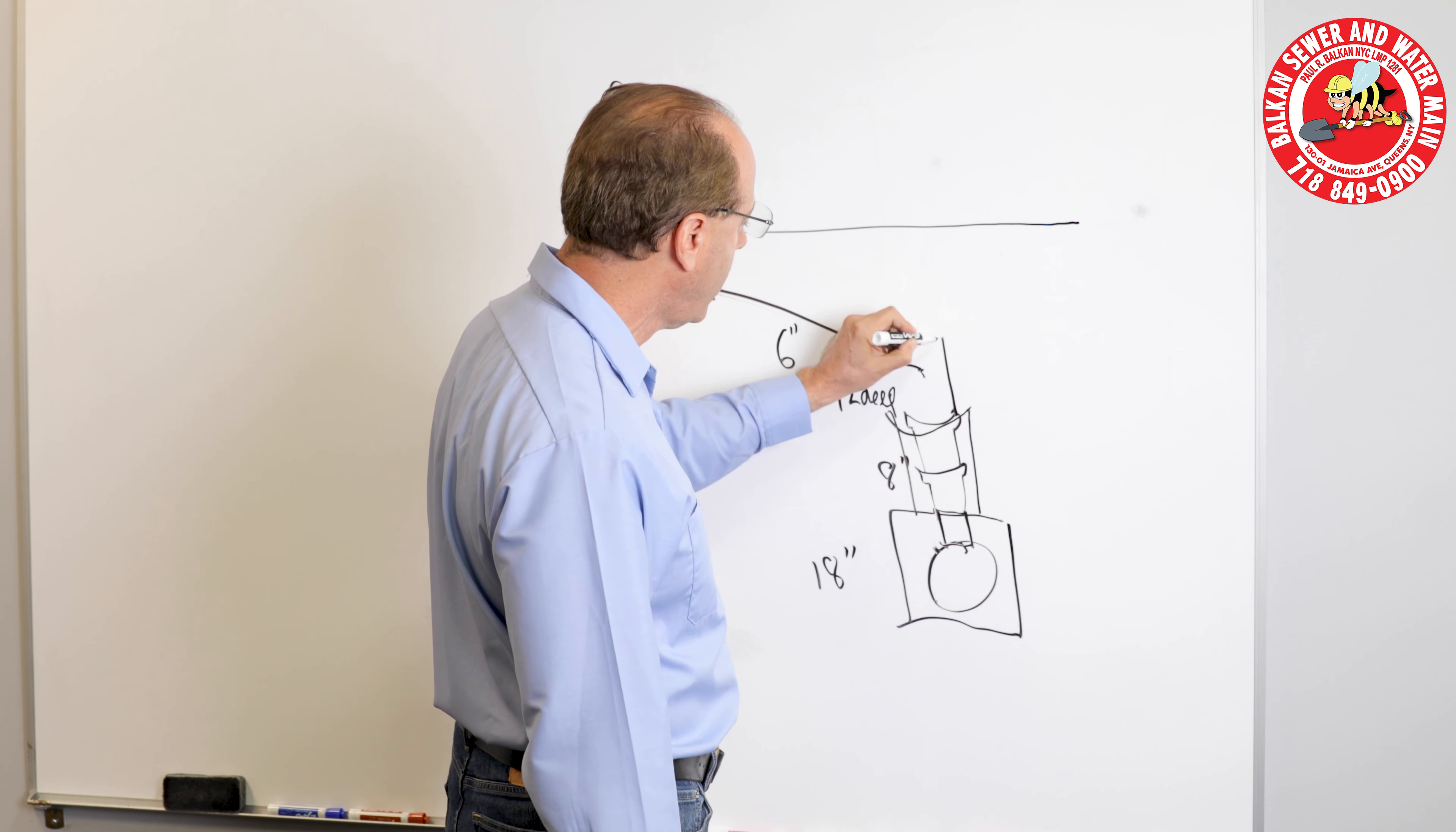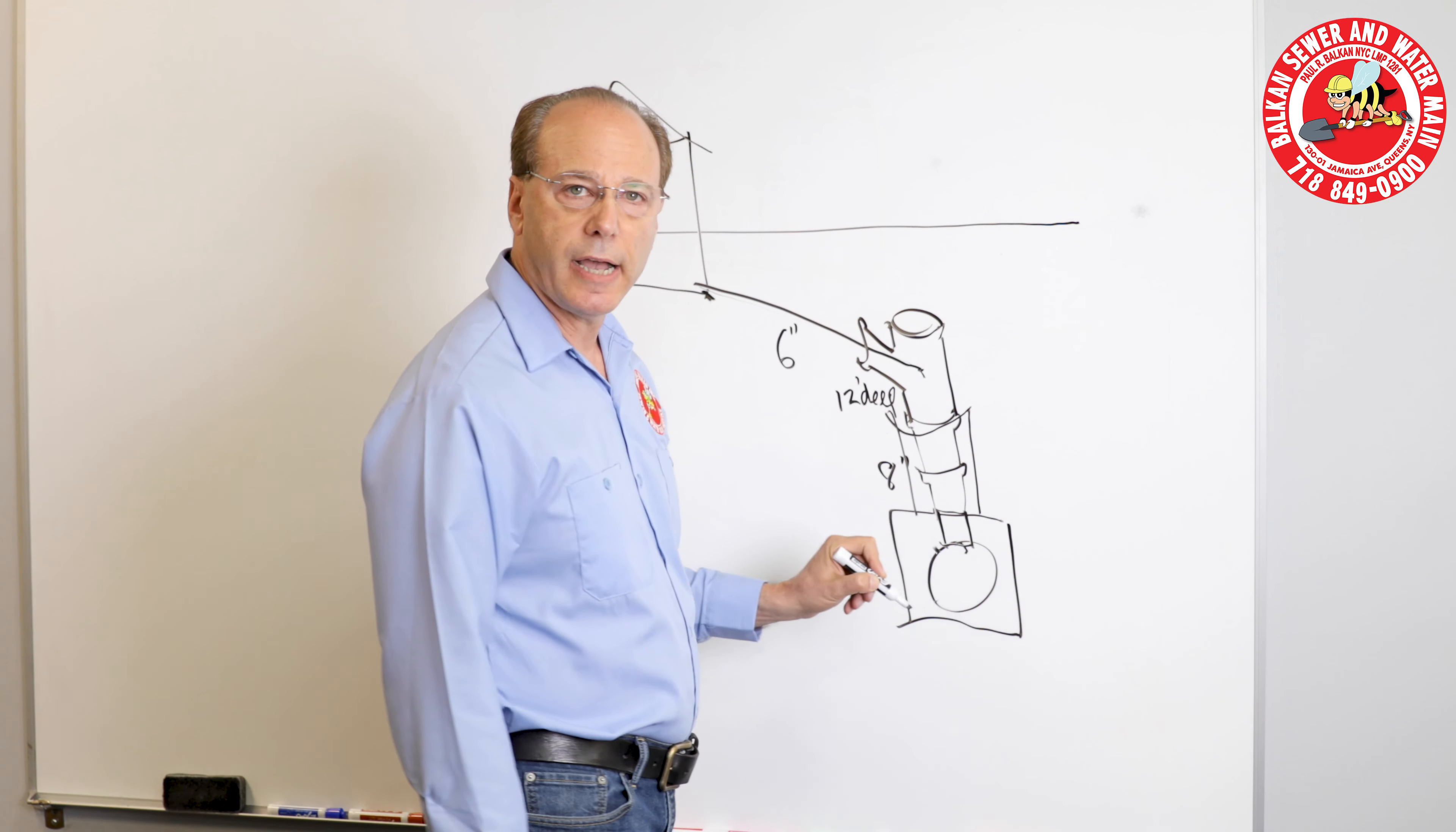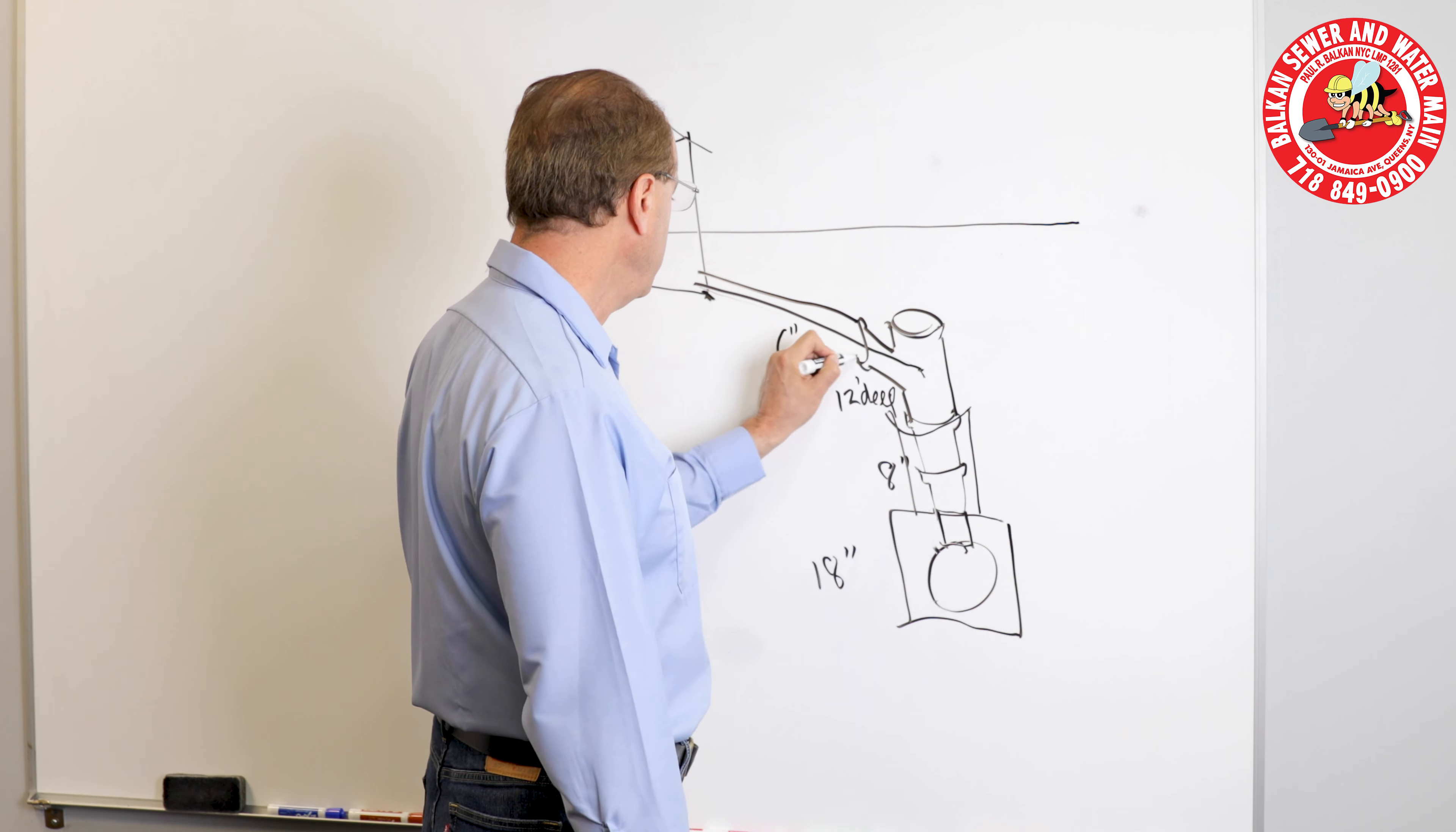On top of this is typically a Y-fitting. The Y part is your connection. The top is used as a cleanout. If the riser were ever to be clogged, there's a way to clean it out. Of course, it's going to be backfilled and buried, and then that would be the connection that you would connect to.